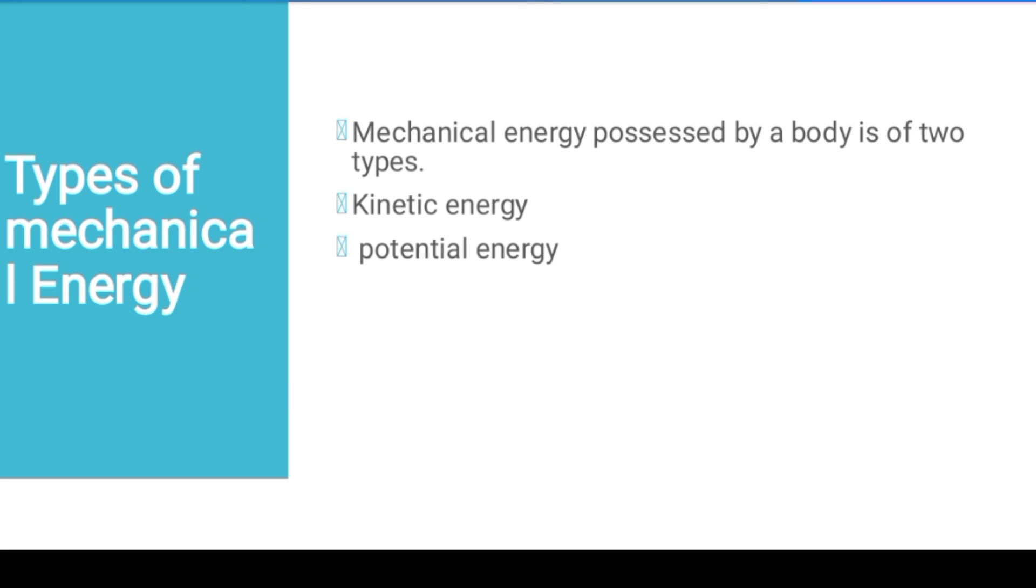Next we have mechanical energy. Mechanical energy is basically the energy that a body possesses with respect to its position or motion. Mechanical energy is possessed by our body in two ways: one is kinetic energy and the second is potential energy. If there is a link with motion, that will be kinetic energy. If there is a link with position, that will be potential energy.